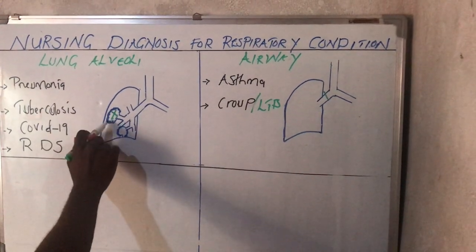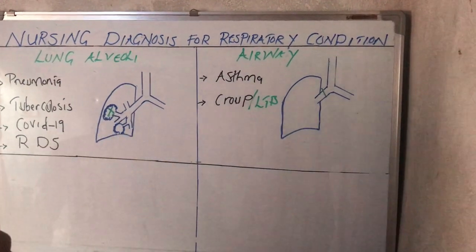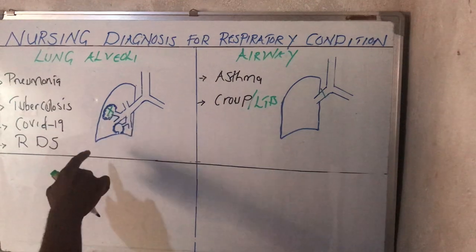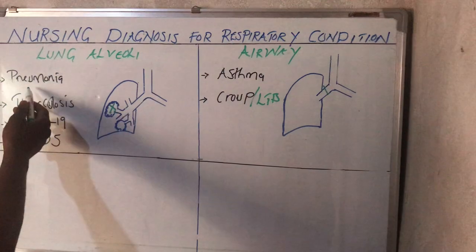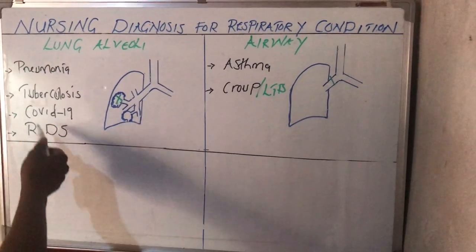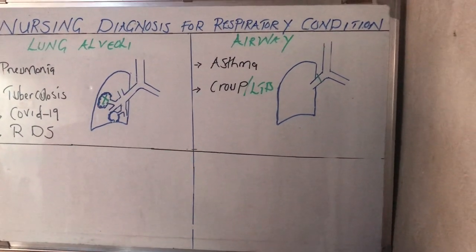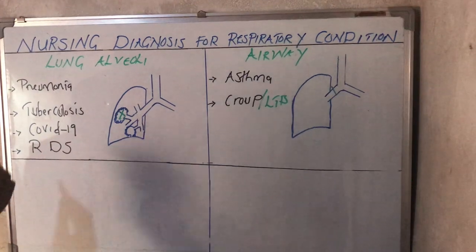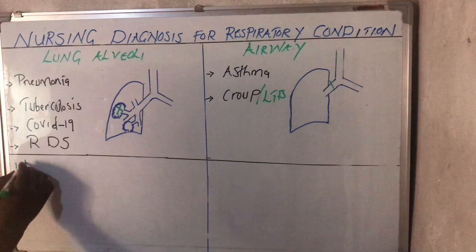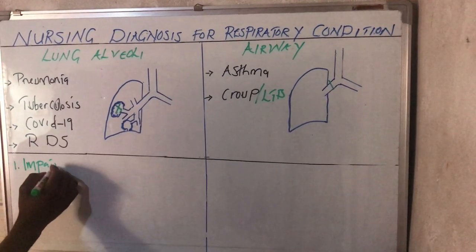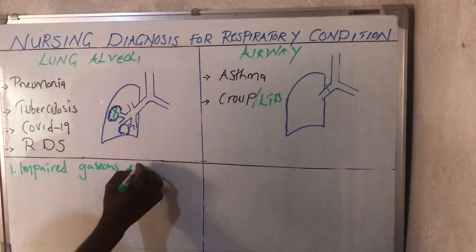Looking at the lung alveoli, gaseous exchange actually takes place inside the lung alveoli. So what would be the number one nursing diagnosis if a patient has come with pneumonia, tuberculosis, COVID-19, or respiratory distress syndrome? Of course, the patient is going to have impaired gaseous exchange. This is the number one problem.